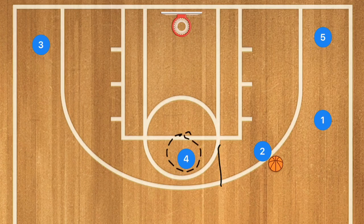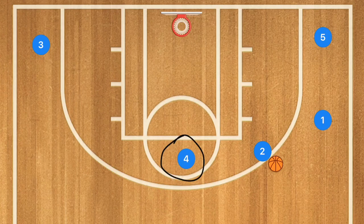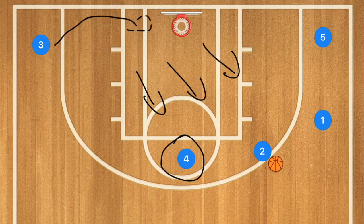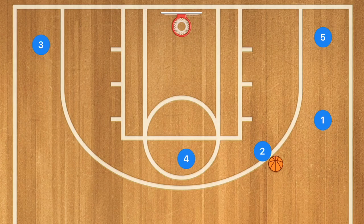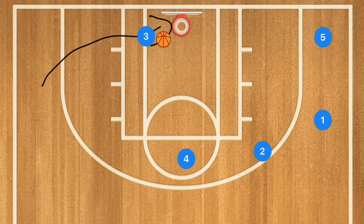Now player two has a couple of different options. He can drive towards the rim if it's open, or he can pass to player four if player four is open for a three-point or mid-range shot. Or if the defense gets pulled up — which happens quite often — we can have player three reading the defense, reacting, and cutting baseline on the weak side for the alley-oop or a nice easy layup.